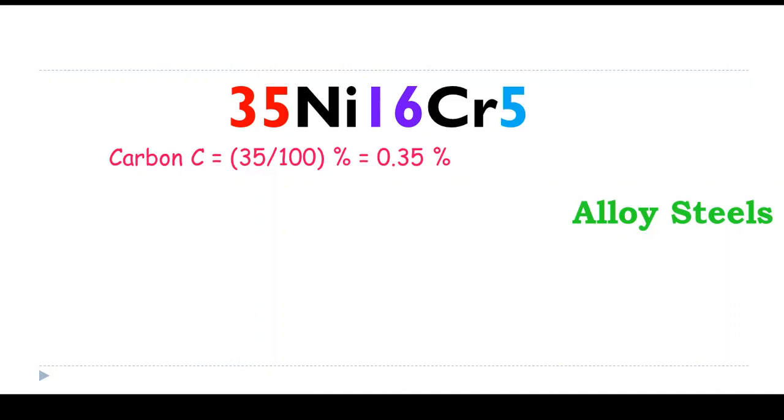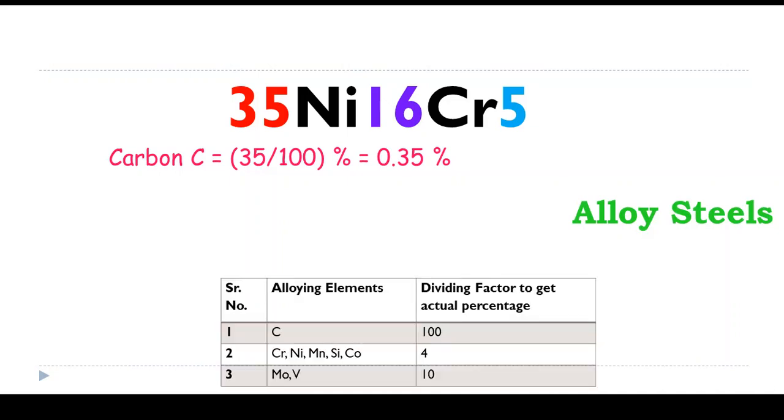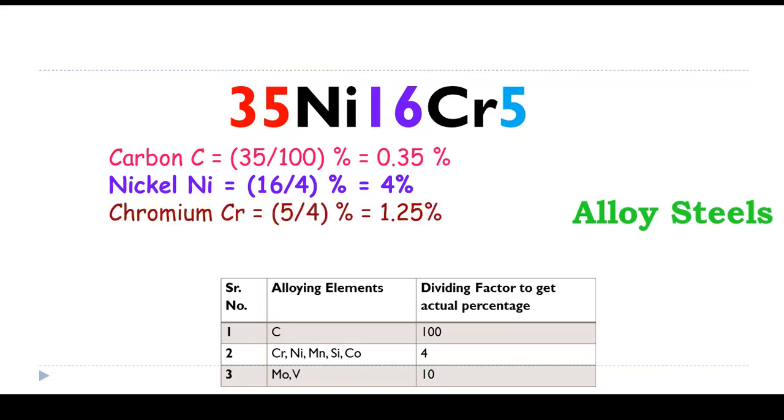35Ni16Cr5: 35 divided by 100 is 0.35%. Ni is 16 so you can see 16 divided by 4 is 4%. Cr is 5, second table, 5 divided by 4 equals 1.25%.